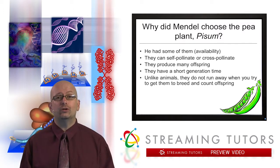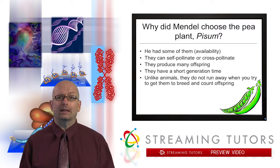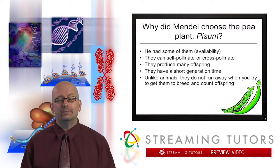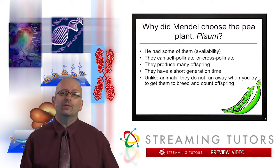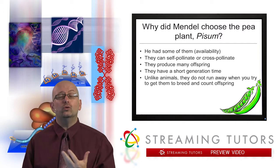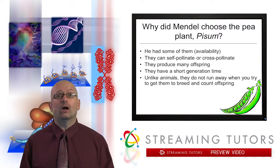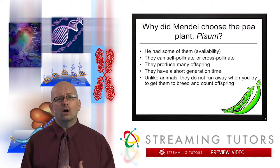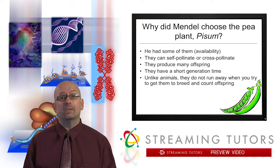Peas also produce many offspring. When you do a statistical analysis, the more data you have, the better the results. Humans can have many kids, but maybe seven or eight — not hundreds. Peas also have a short generation time, meaning the time from fertilization to sexual maturity of an adult plant, which is about two weeks for peas. In contrast, the human generation time is about 15 years — a very long wait for analyzing offspring of a cross. So for all these reasons, peas were attractive for experimentation.